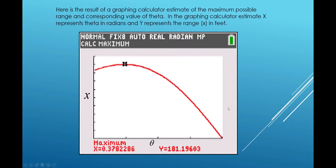We could approximate that on a graphing calculator. Here it's being approximated on a TI-84 color edition. The calculator gave us a maximum value for y, in this case x, with the theta value about 0.3782286 radians and this maximum range about 181.19603 feet.